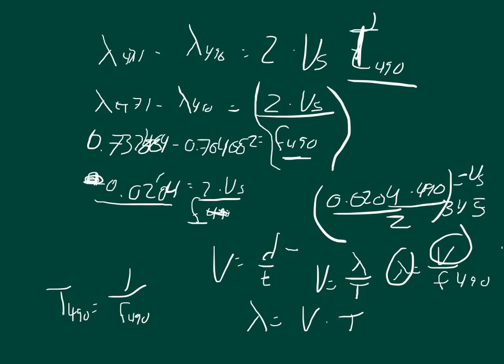I did make one mistake. This should be an eight. So that should be an eight. And if you don't make that an eight, you get a totally, completely incorrect answer. So, 0.0284 times 490 divided by two. And that gives you an answer of roughly 6.958599.